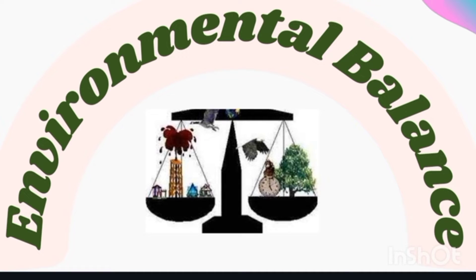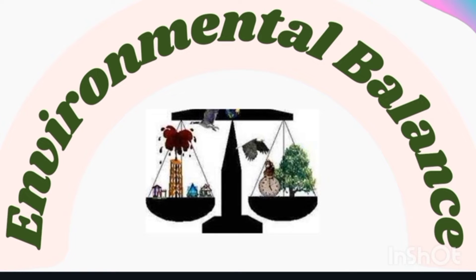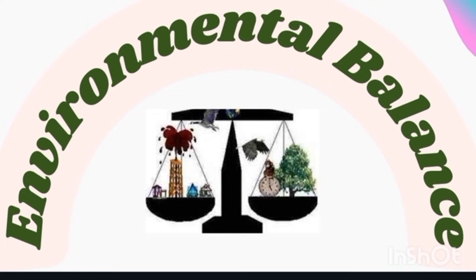If one factor of the environment is damaged, its relationship with other factors also gets affected and the environmental balance is disturbed. From time to time, some living things on earth have become extinct. One example of an extinct animal is the mammoth, but today this process is taking place at a much faster rate, which is a threat to the whole living world.